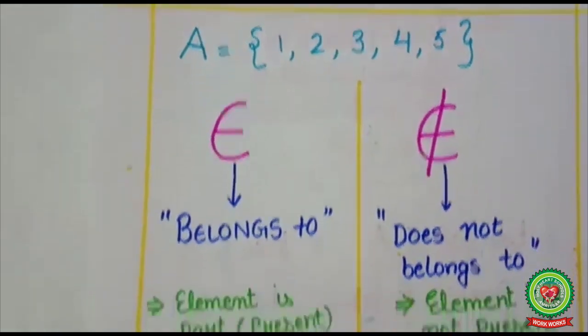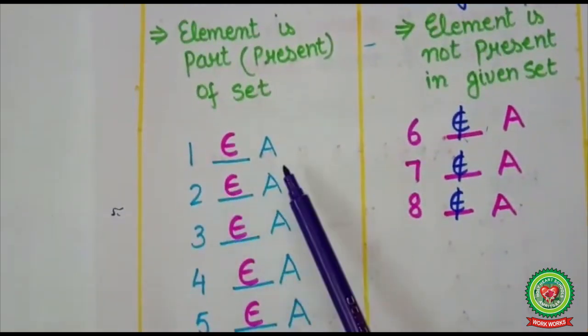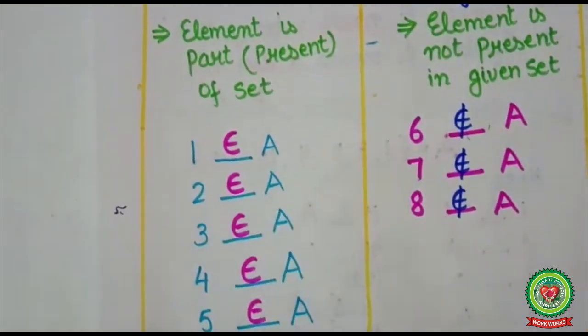So here I will use belongs to sign. So here I will write 1 belongs to A, 2 belongs to A. Similarly 3, 4, 5 belongs to set A.